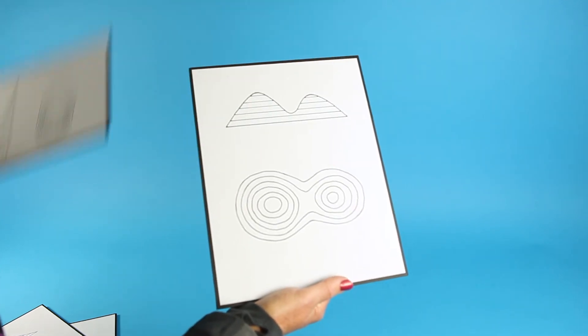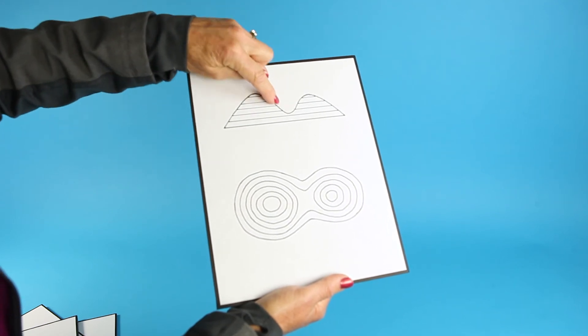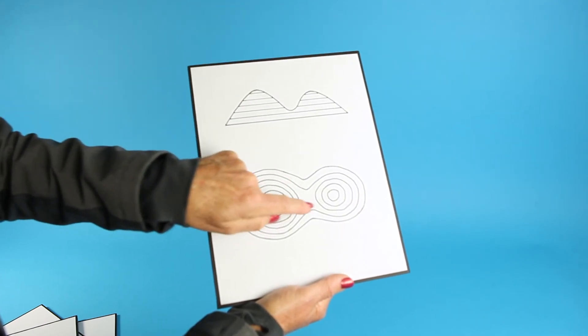This pattern shows two peaks together, forming a saddle, with a typical bow tie or X-shaped flat spot between them.